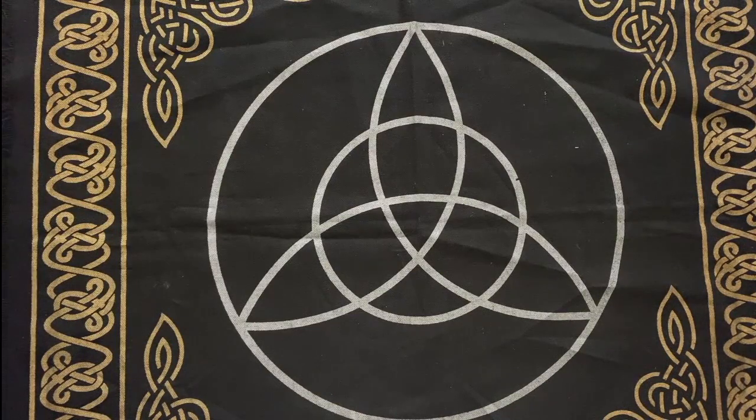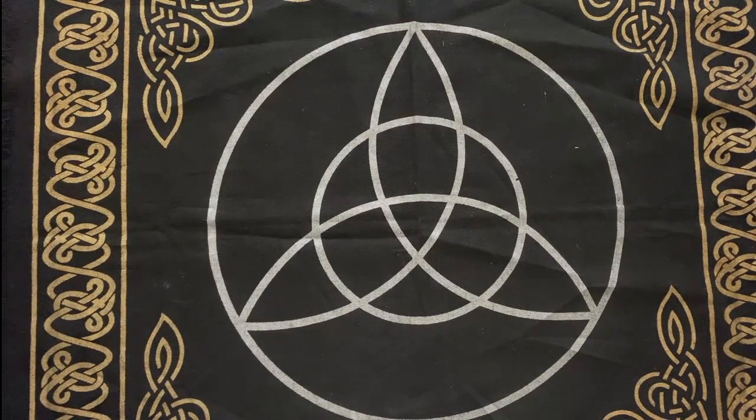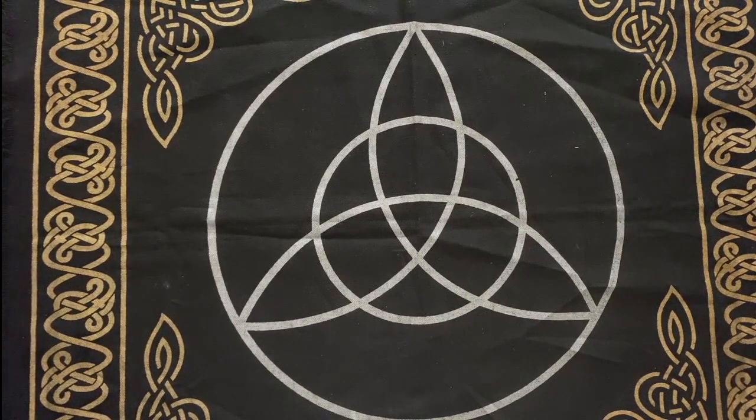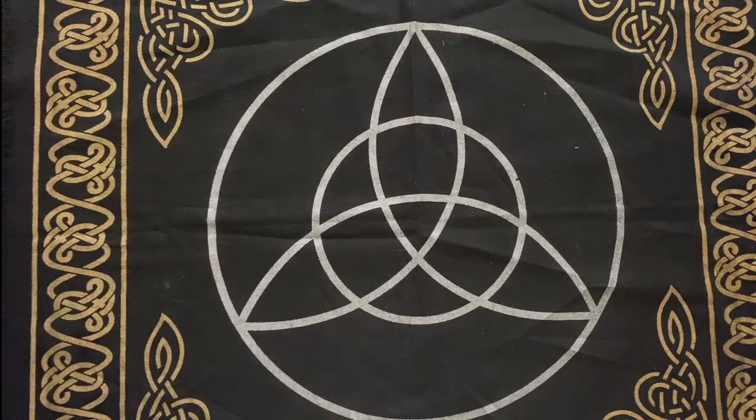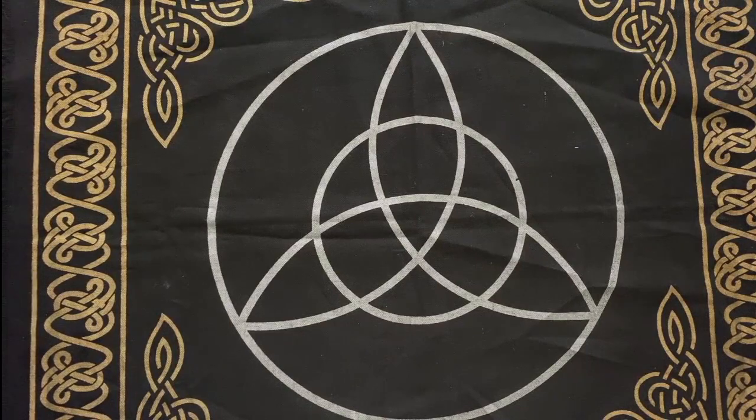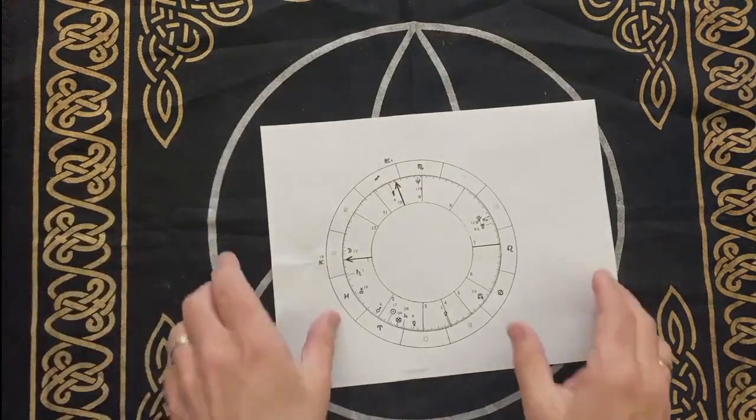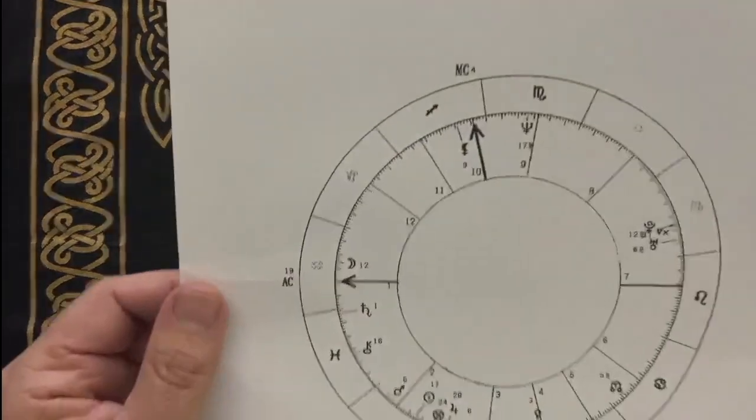And the only thing you need different for this talisman than the other basic talisman that we do is you need to get your natal chart cast. You need to go to any place where you can get online where you can get an actual chart cast. And so you'll get a chart, a birth chart, and it'll look something like this.